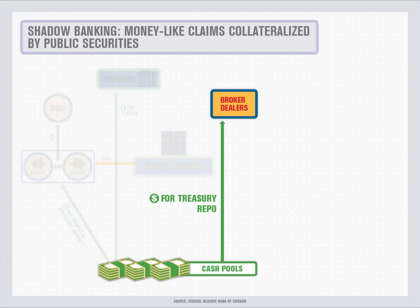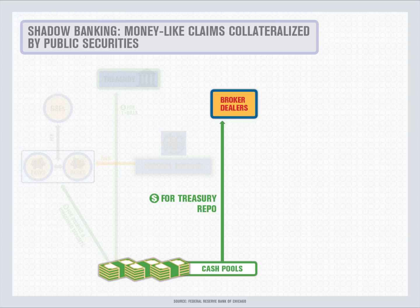Repo lending does expose a cash pool to some counterparty risk. If the other side of the repo defaults, the cash pool will have to sell the securities to get its money back. However, the security is a safe government bond that can be easily sold. Lenders in a repo transaction further protect themselves by marking down the value of the collateral relative to its true market value — an adjustment known as a haircut. For example, the lender may agree to pay $100 for securities that have $103 of market value, so that if the haircut is big enough, the lender can resell the securities at no loss.